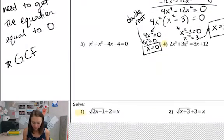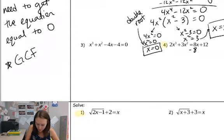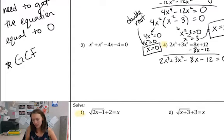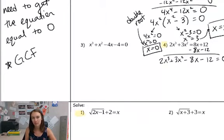All right, moving down to example 4, we have a cubic equation. Again, my first step is just going to get everything to the same side: 2x³ + 3x² − 8x − 12 equals zero, so that we have it equal to zero, we can factor and solve. Now, this type of factoring is a little different. We call this factor by grouping.